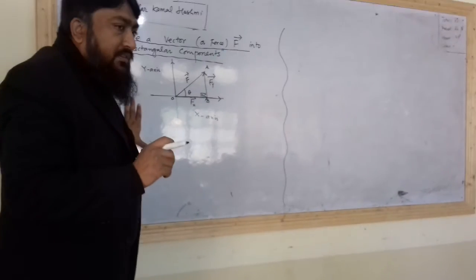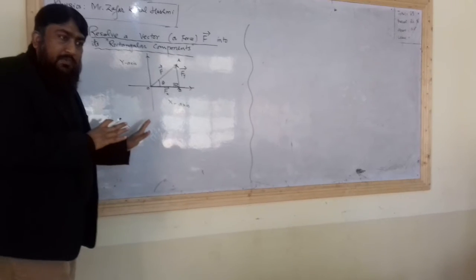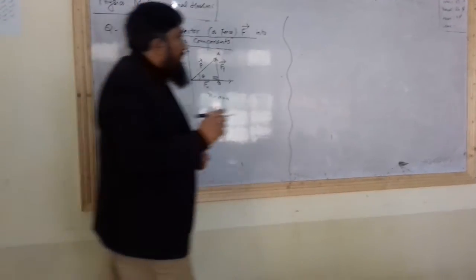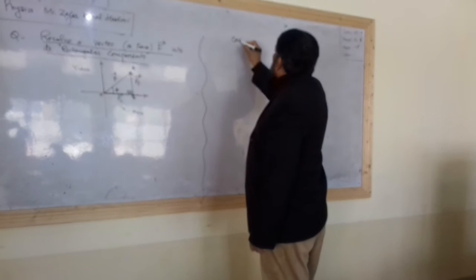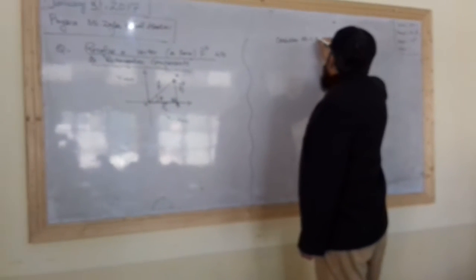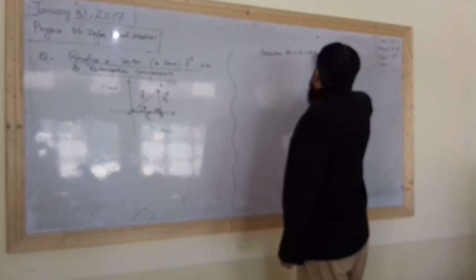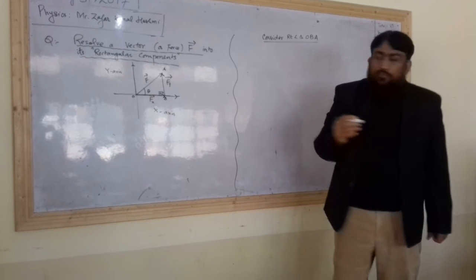Now coming towards the magnitude of Fx and Fy. Now we will consider right angle triangle OBA.